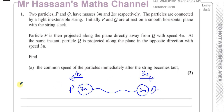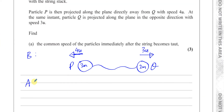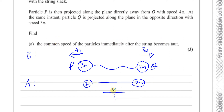This is what's happening before the string becomes taut. When the string becomes taut, basically what's going to happen is they're going to be acting as one particle. This is 3m and this is 2m, and they're going to have a common speed. We're not sure which way it's going to be right now — we just have to find the magnitude. Their common speed after the collision will be common because they're held together by the string, so they'll be acting as if they're one particle moving in the same direction.